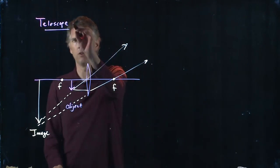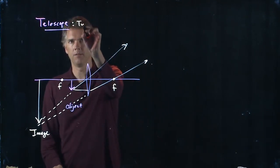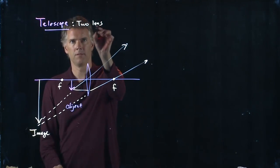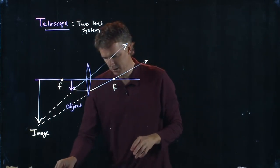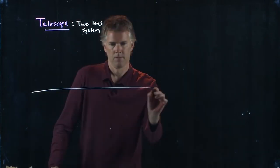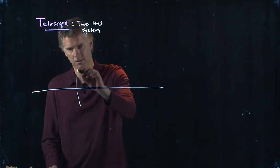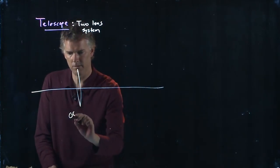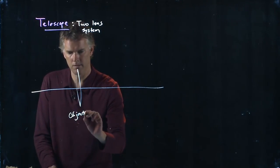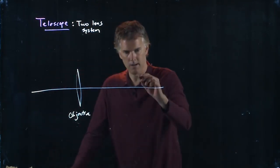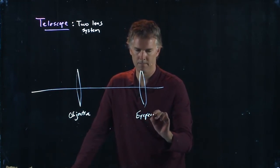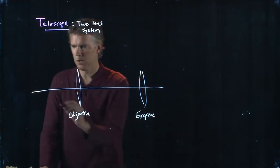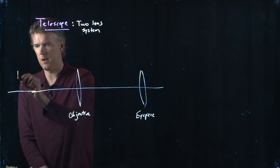We know that a telescope has two lenses in it. And keeping this in mind for a second, let's go back to the two lens system. So a telescope has an objective and an eyepiece. And we want to see a distant object.